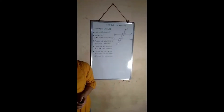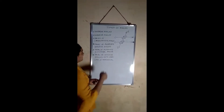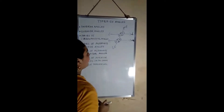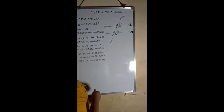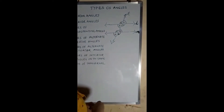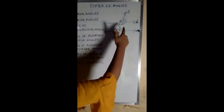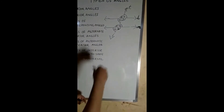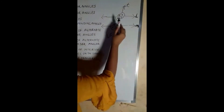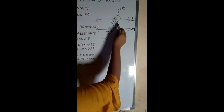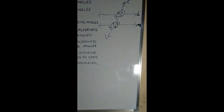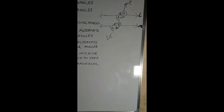Now let us study about interior angles. Interior angles are the angles which are between the two parallel lines. In this figure, 3, 1, 6, and 8 are interior angles.